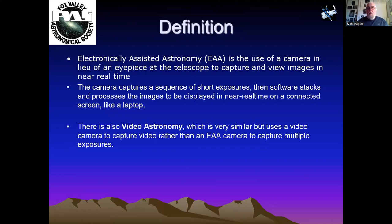Here's the definition of EAA — which I thought stood for Experimental Aircraft Association when it first came across in the emails. What it actually is: the use of a camera in lieu of an eyepiece at the telescope to capture and view images in near real time. The camera captures a sequence of short exposures, software stacks and processes the images to be displayed on a connected screen like a laptop. There's also video astronomy, which is very similar but uses a video camera rather than an EAA camera.